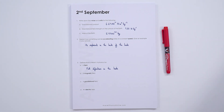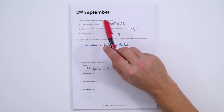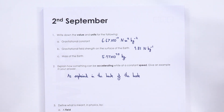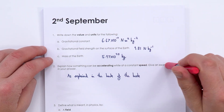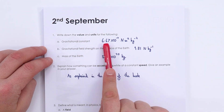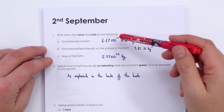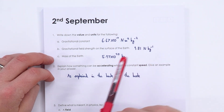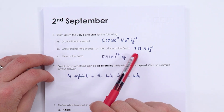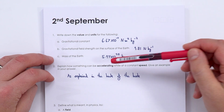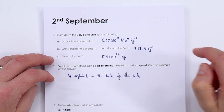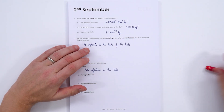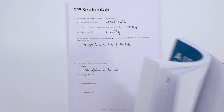On the 2nd, the first question is just writing down the values and units for some common numbers — these are going to come up all the time. You don't have to remember them all off by heart because a lot are given in your data and formula book. But big G, the gravitational constant, is 6.67 × 10⁻¹¹. Gravitational field strength on the surface of the Earth is 9.81 N/kg, and the mass of the Earth is about 5.97 × 10²⁴ kg.